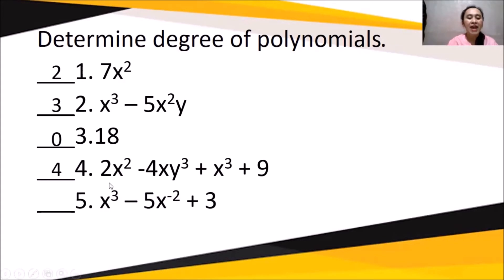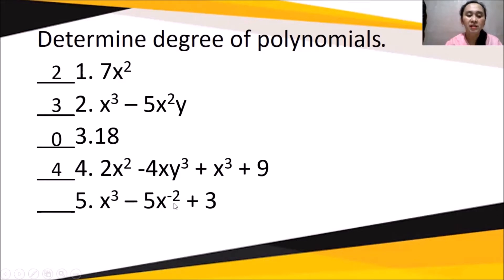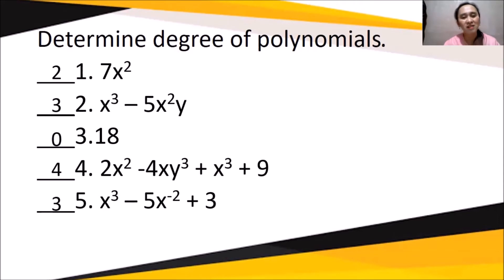Number five: x³ - 5x⁻² + 3. The first term exponent is 3. The second term exponent is -2. So the highest degree of the polynomial is 3. I hope the examples for determining the degree of polynomials are clear.